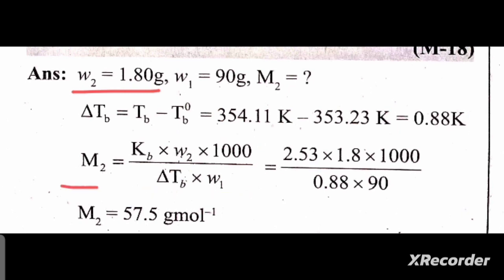We have a formula for elevation in boiling point to calculate molar mass of solute. M2 equals Kb, ebullioscopic constant of benzene 2.53, times mass of non-volatile solute W2, 1.8 grams, times 1000 divided by delta Tb. Elevation in boiling point is 0.88 Kelvin.